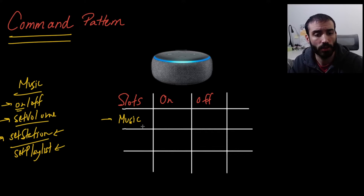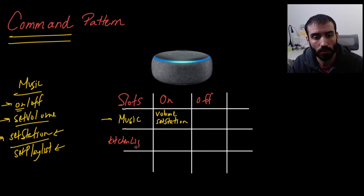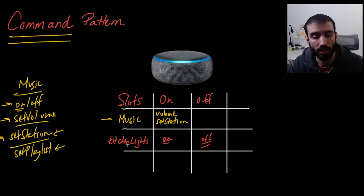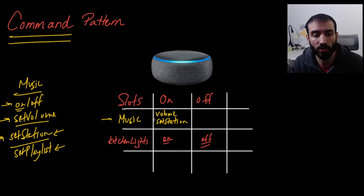Let's go through a couple more slot examples. For the music slot, 'on' means turning it on, setting the volume, and setting the station or frequency. For kitchen lights, it's much simpler — 'on' just turns them on, and 'off' turns them off, with no extra functionality. Maybe if you had lights with different temperature or brightness settings you could add more, but this is the simple binary case. The key thing about the pattern is that it lets you encapsulate the 'on' behavior into an object and define whatever that means.